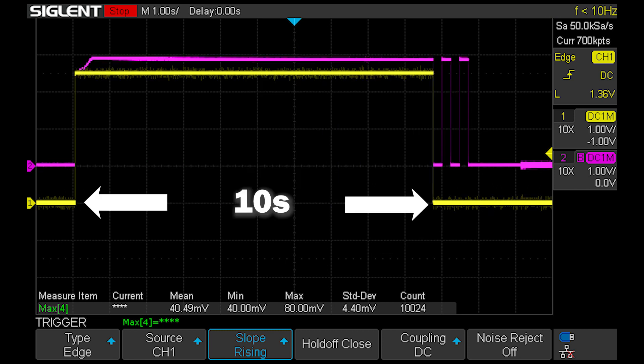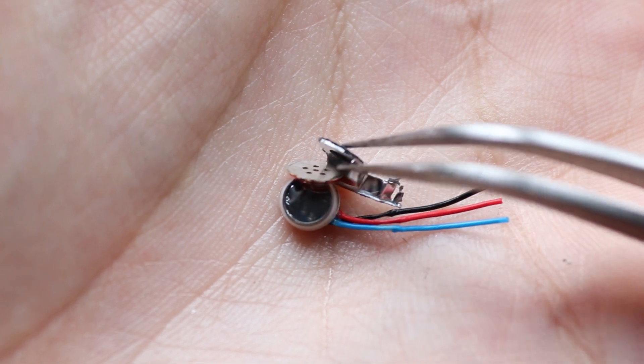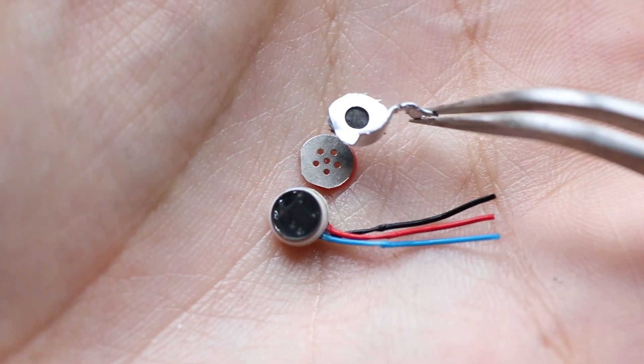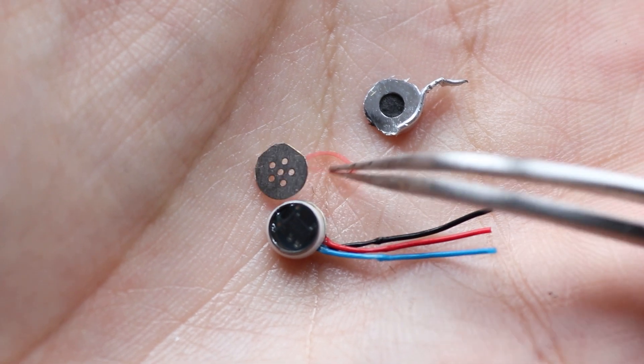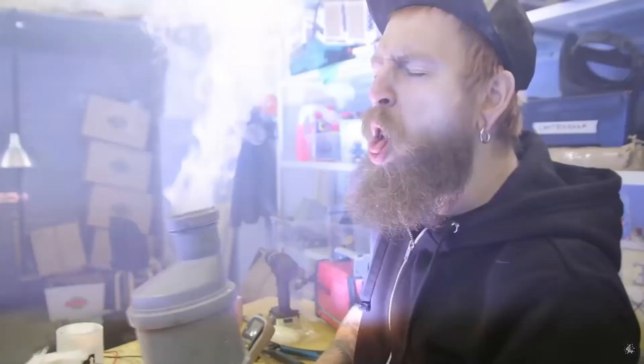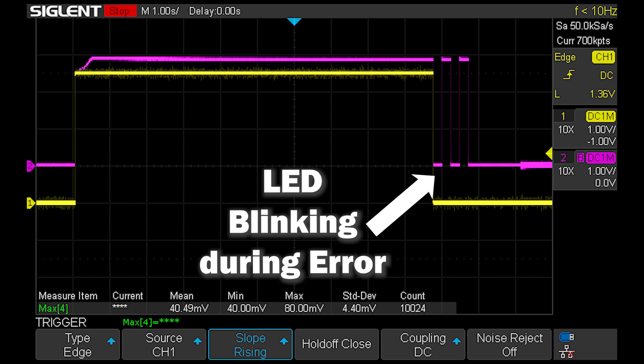Also when the puff is too long, over 10 seconds, the IC turns the heater off, because it detects a possible sensor error. Because, you know, maybe parts of the sensor just stuck together for some reason, or something like that. Because in reality it is really hard to inhale this thing for 10 seconds and more. But in this case, the LED indicates an error.